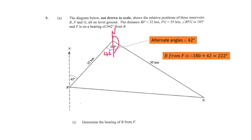Another way to look at it: since we know the alternate angle is 42 degrees, we could calculate the angle on a straight line, which would be 180 minus 42, giving 138 degrees. Then calculating the total angle at that point, equal to 360 degrees, and adding it to 103, would still give us 222 degrees. From whatever approach, the answer is 222 degrees.